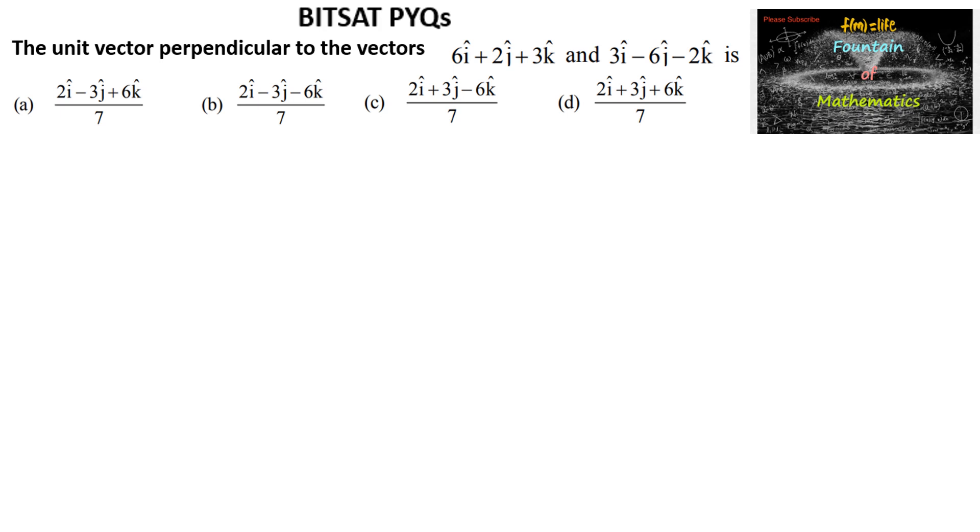We need to find the unit vector which is perpendicular to the vectors. Say vector a is equal to 6i plus 2j plus 3k and vector b is equal to 3i minus 6j minus 2k.